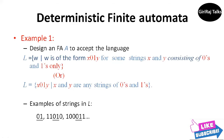Consider one example. Let us formally specify a DFA that accepts all and only the strings of 0s and 1s that have the sequence 0,1 somewhere in the string. We can write this language L as: L equals the set of w such that w is of the form x, 0, 1, y for some strings x and y consisting of 0s and 1s only. Another equivalent description is L equals {x, 0, 1, y such that x and y are any strings of 0s and 1s}.